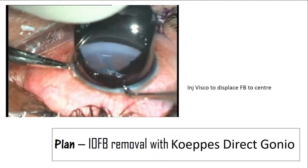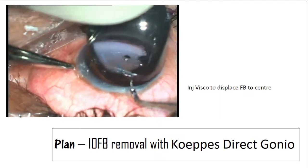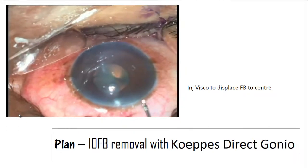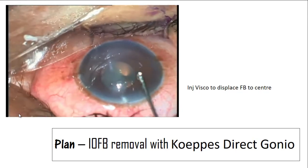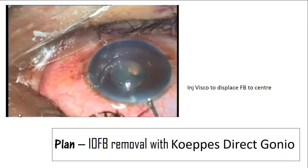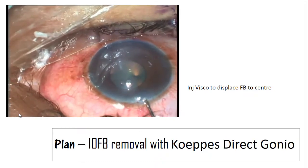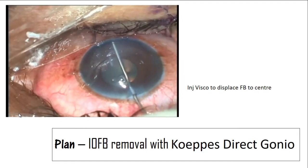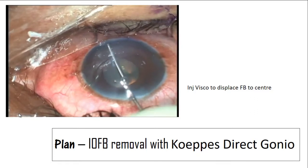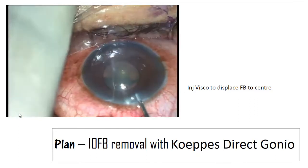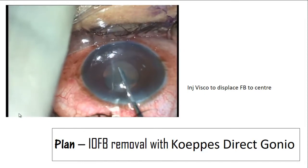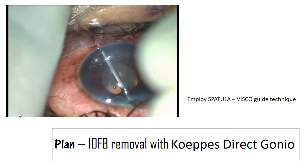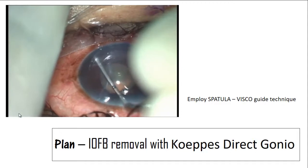Finally, when the foreign body has been displaced, we inject viscoelastic to move the foreign body towards the center. Once the foreign body is visualized through the microscope, we employ a spatula viscoelastic-guide technique to remove it.